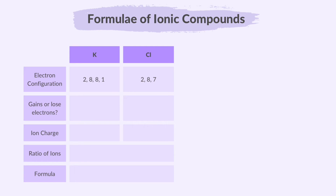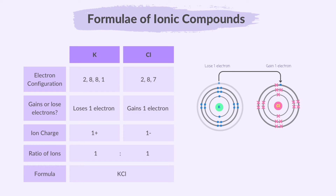First example: potassium chloride. Looking at the electron configurations of potassium and chlorine, potassium must lose one electron to gain a stable electron configuration and chlorine must gain one electron. So, potassium ion will be K+ — we don't write the 1 on charges, only the sign — and chloride ion will be Cl−. We always write the positive ion first. Since both have the same number of charges, their ratio is simply 1 to 1. So in potassium chloride, KCl, for every potassium ion you need one chloride ion, Cl−, to balance the charges and create a neutral ionic compound.